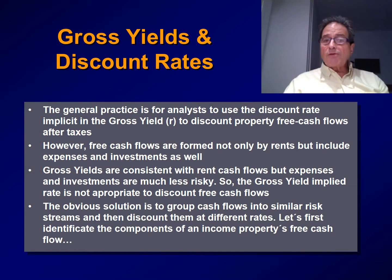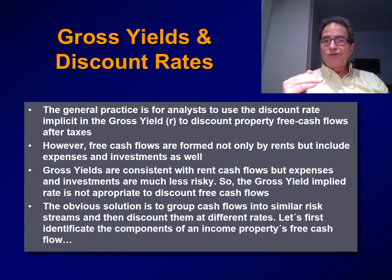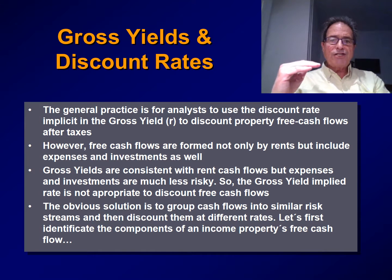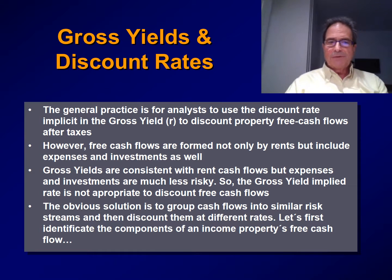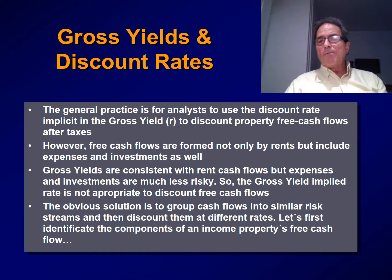The obvious solution is to group cash flows into similar risk streams, and then discount each stream at its corresponding rate according to its risk. Let's start by identifying the components of an income property's free cash flow.